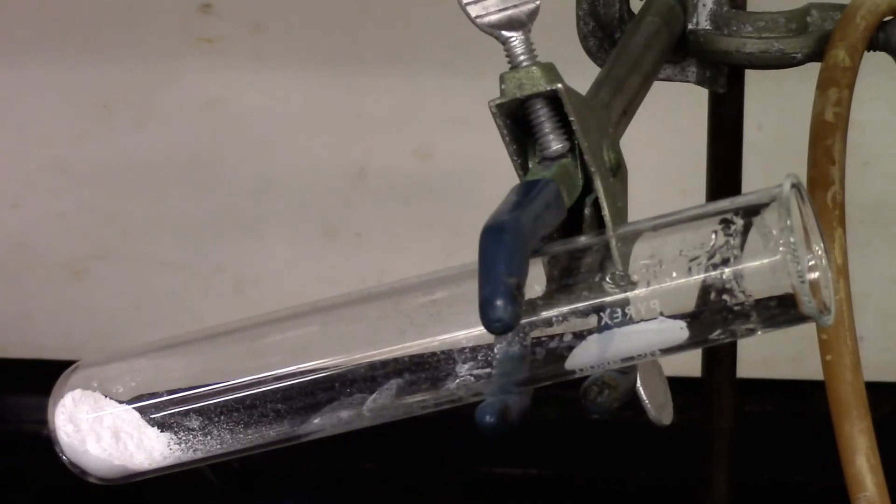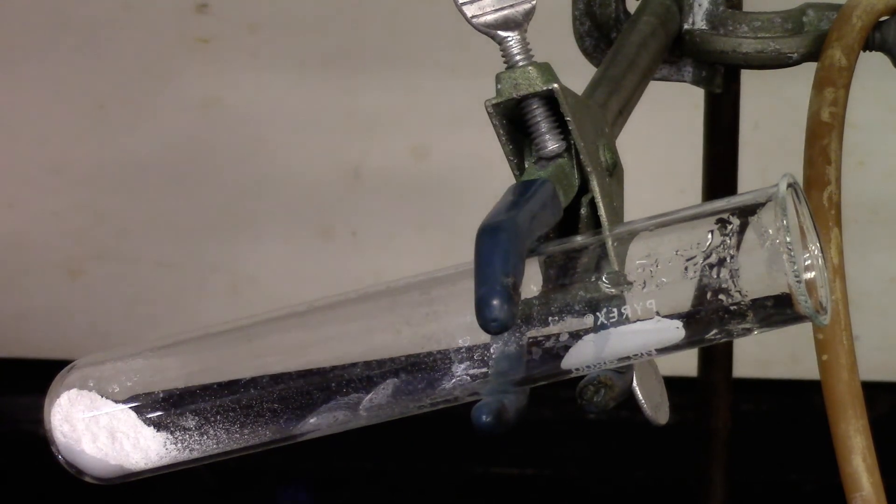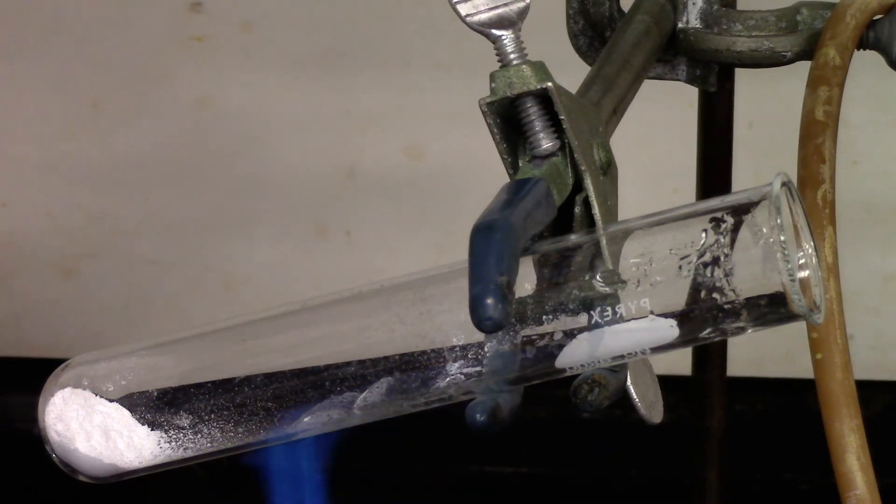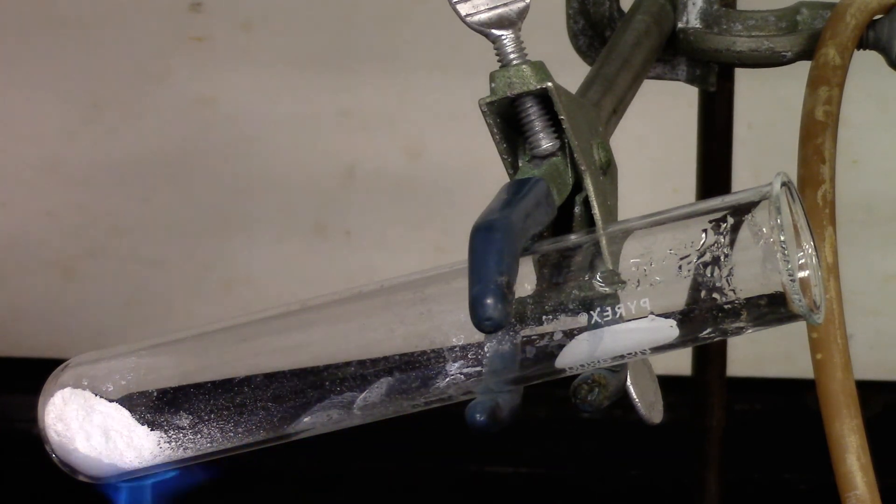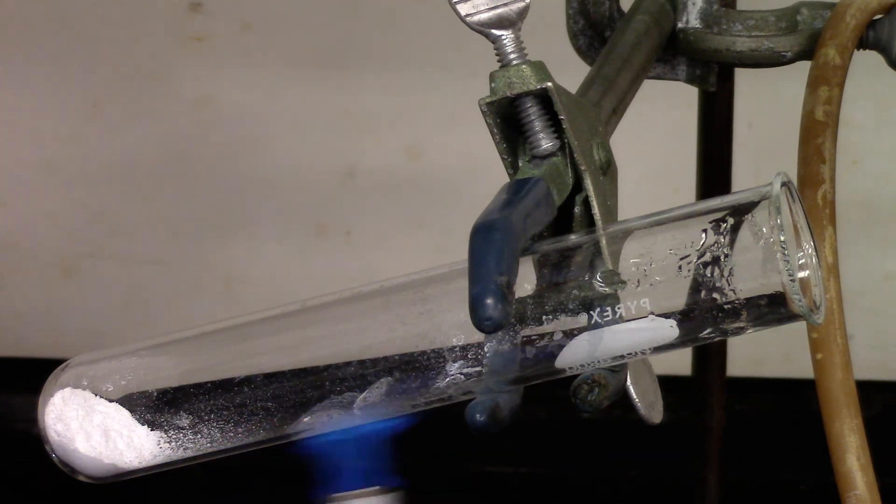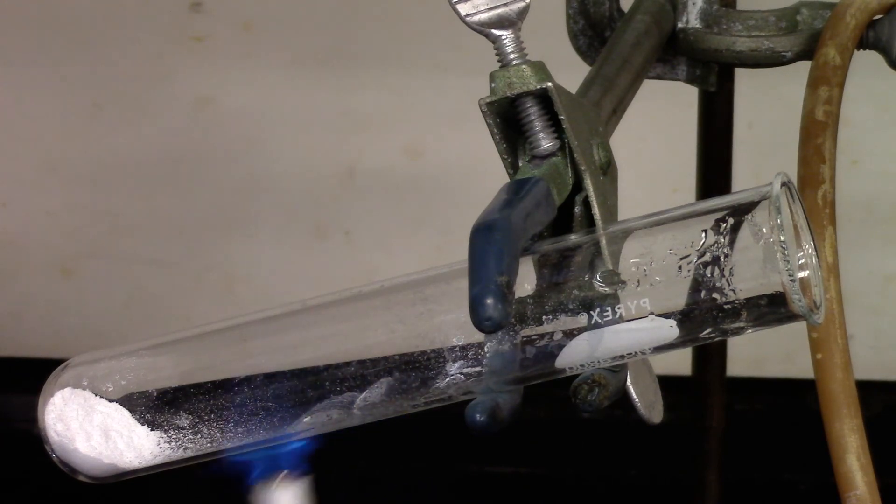So you can see the moisture deposition in the test tube. If you weigh it with the moisture, it will incorporate a lot of error. So we'll heat it so the moisture dries out before we can weigh it.